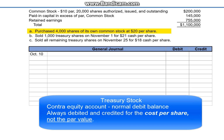The journal entry to record the purchase of the 4,000 shares is a debit to the Contra Equity account, Treasury stock — 4,000 shares multiplied by the $20 cost per share equals $80,000 — and a credit to cash. This is the cost method. The par value of the shares is not considered when accounting for Treasury stock.